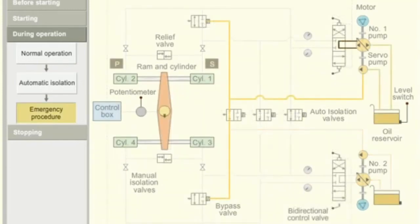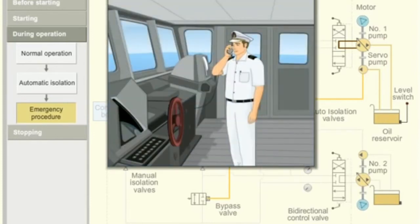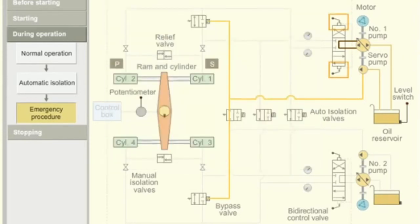Consider during operation, the power supply fails in the control unit. In such an emergency, an alternative communication system is used to give the helm order to the steering compartment. The bi-directional control valve is actuated manually by using the levers.